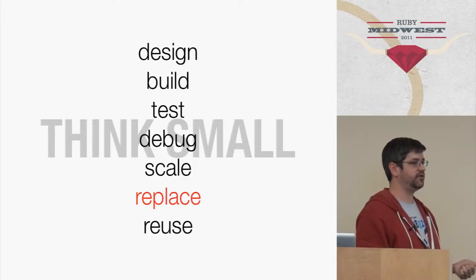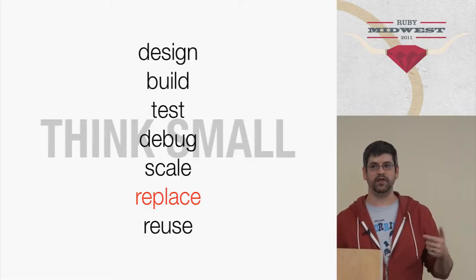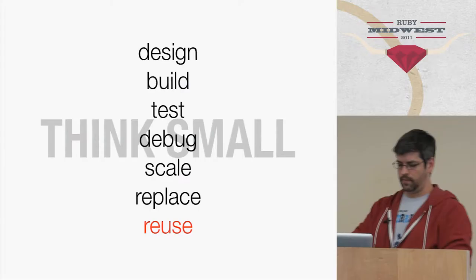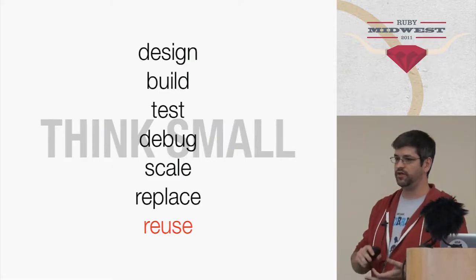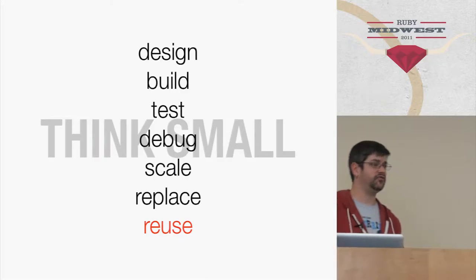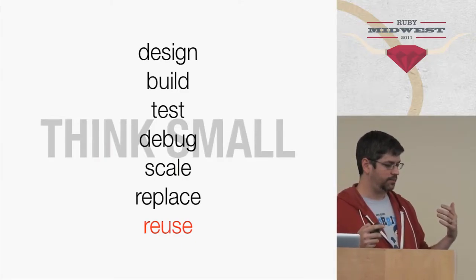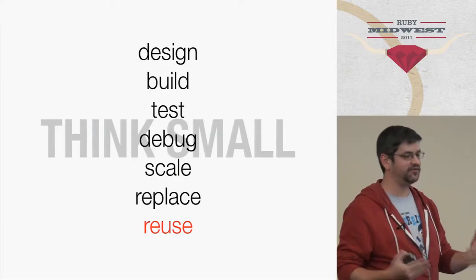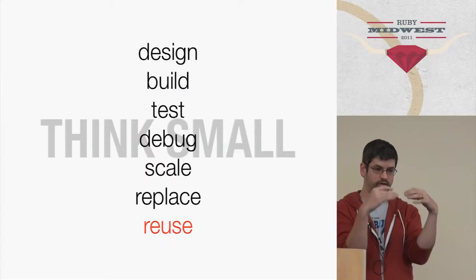Small apps are easier to replace. If you find out that somebody has been building a better video encoding service, you can just slap in their solution instead of your own. And they're easier to reuse. If you've built authentication as a separate app — your own OAuth service provider — you can use it to provide authentication to all of your apps instead of building it each and every time. The Heroku add-on catalog is a great place to look; there are tons of services people have built as tiny single-function applications.